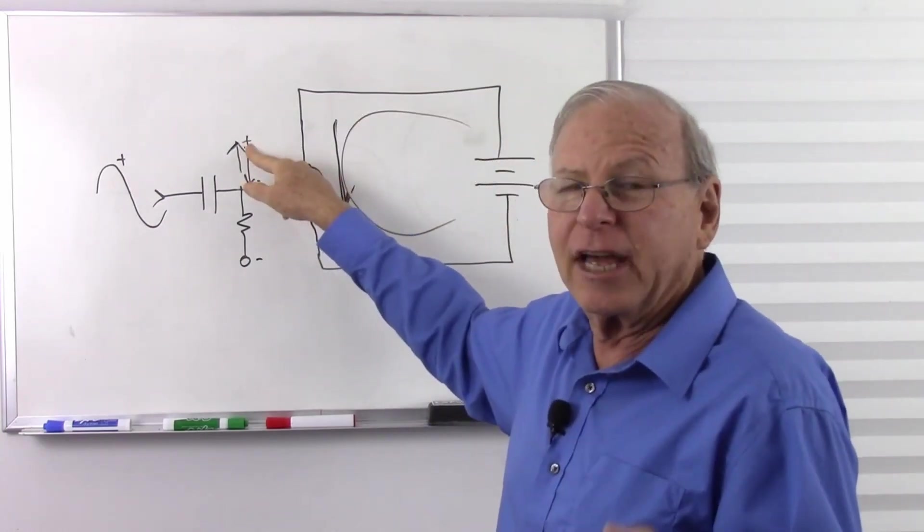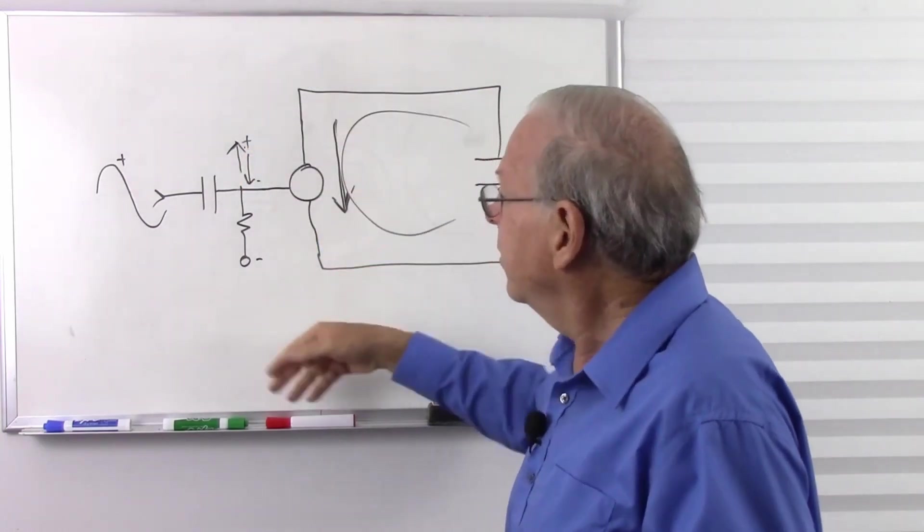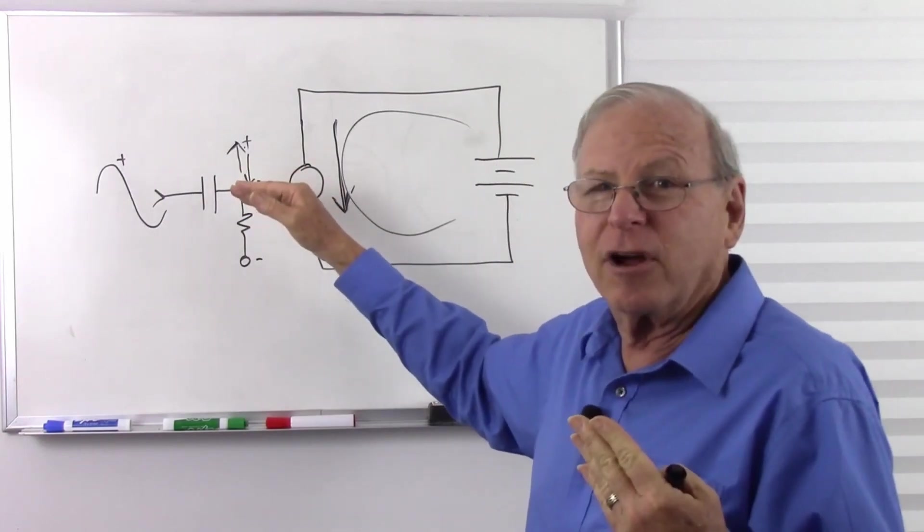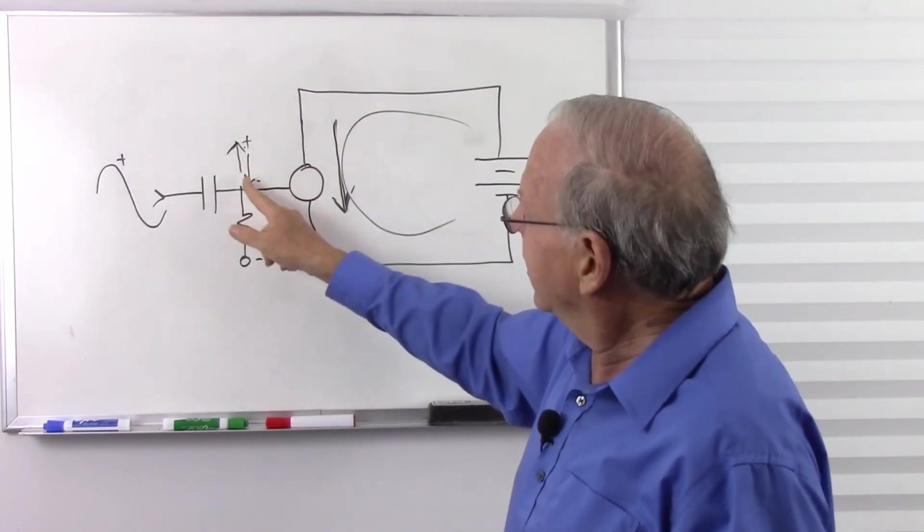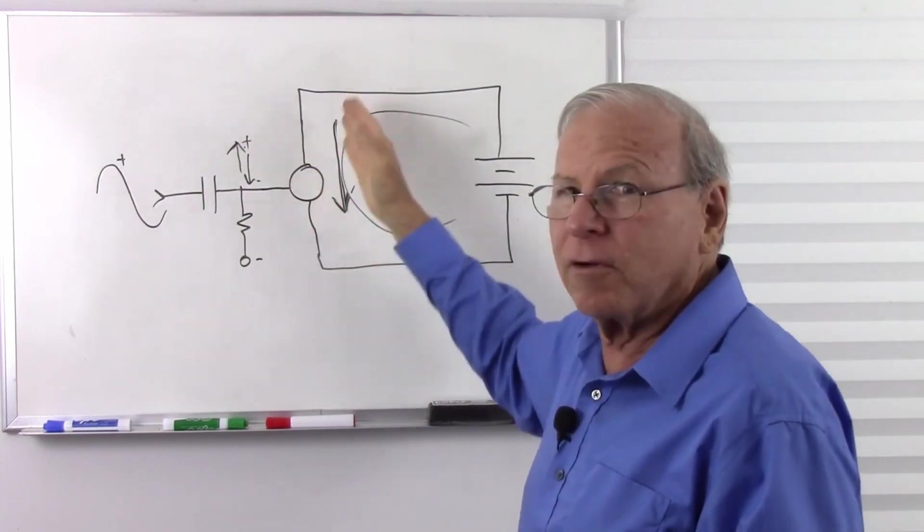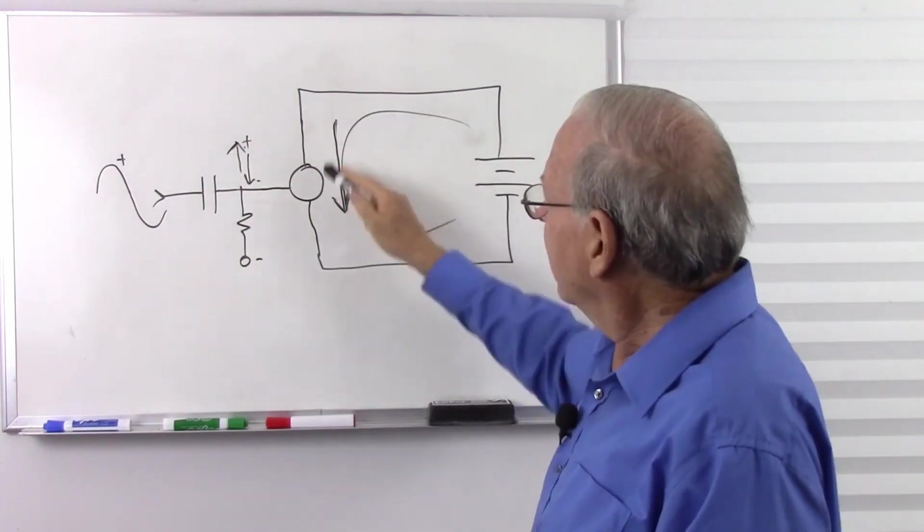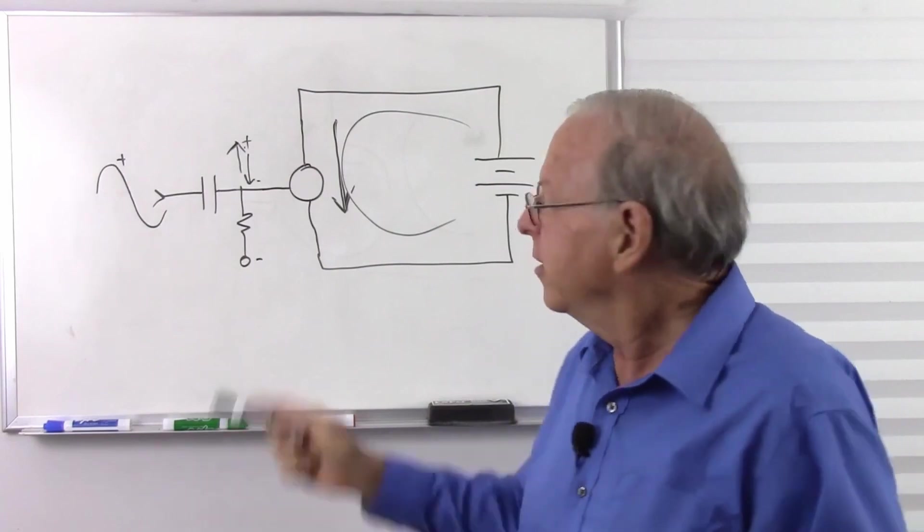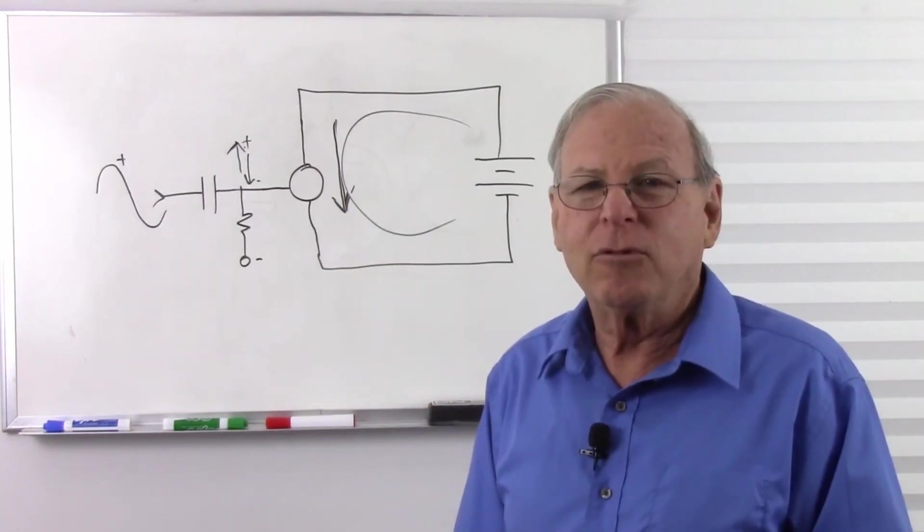More positive, it blocks the electrons less, therefore more current. More negative, it blocks the electrons more, so less current. So higher voltage, greater current. Lower voltage, less current. And there we are using conventional current to analyze the vacuum tube circuit.